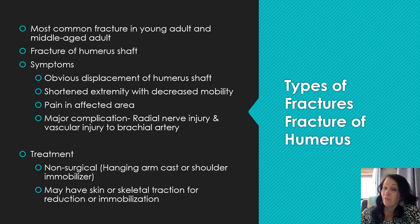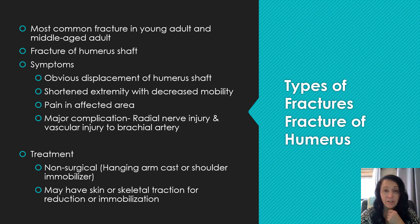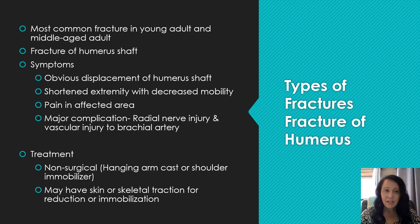A humerus fracture is most common in young and middle-aged adults — a fracture of the humerus shaft. Symptoms include obvious displacement, shortened extremity with decreased mobility and pain. A major complication is radial nerve injury and vascular injury to the brachial artery. Treatment is non-surgical with a hanging arm cast or shoulder immobilizer; may also require skin or skeletal traction for reduction or immobilization.